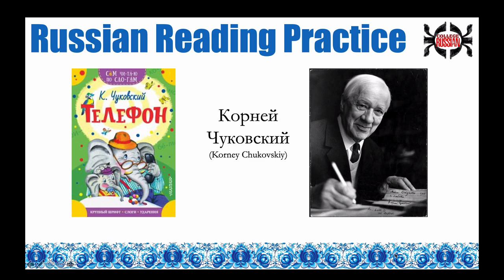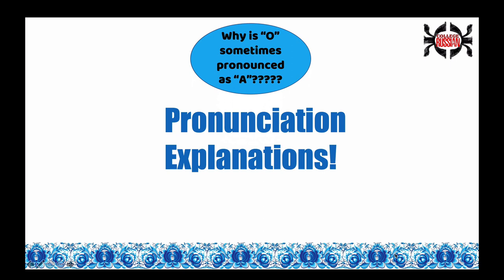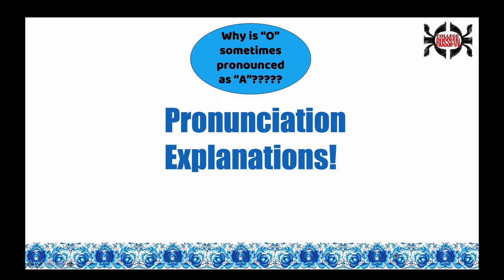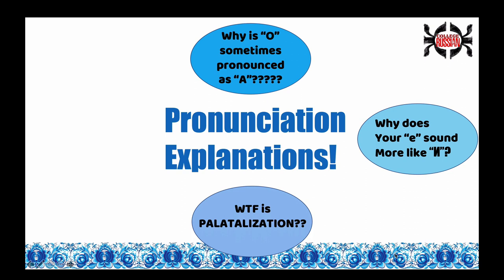Today's book is called Telefon by the author Karniej Tchaikovsky. He's a very clever children's book author similar to Dr. Seuss in English, and so there's very adorable play on words in this which you may or may not pick up on — that's okay. What's going to be unique about this video is there's going to be pronunciation explanations. I often get comments about why O is sometimes pronounced as A, why YI sometimes sounds like E, and what in the world is palatalization — I'm going to teach you about that as we come upon it throughout the story.